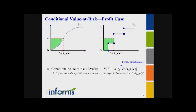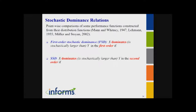There are different CVaR definitions in the literature that can cause confusion — but the idea is just a different convention. If you care about the loss case, you don't like large realizations. But maybe you have a portfolio optimization problem with random returns and you like larger realizations — in that case, undesirable outcomes will be the small ones on the left tail, and CVaR will be a weighted sum of the small realizations. Everything is similar, just focusing on the other tail.